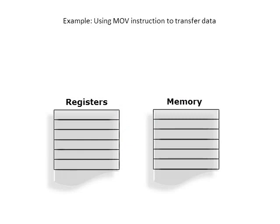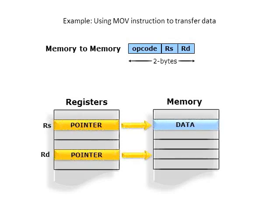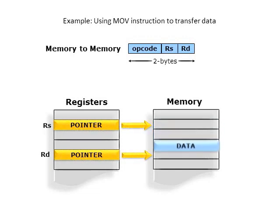Direct memory-to-memory moves can also be accomplished with RX. The instruction consists of the opcode, the source register, and the destination register. When the instruction is processed, the data at the location in memory pointed to by the source register is moved to the location in memory pointed to by the destination register. Direct memory-to-memory moves have an instruction length of only 2 bytes.